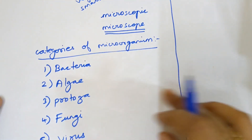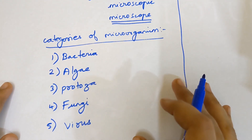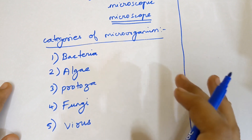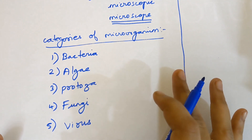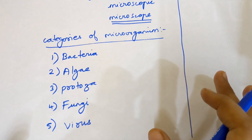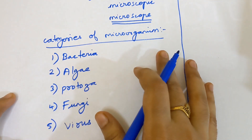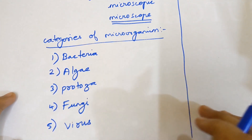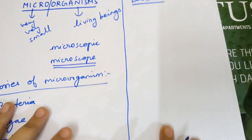Before seeing about each category, one important point: micro-organisms are present everywhere around us — even in the hottest region, even in the coldest region, even in the driest region. It is present in every single climate. One more important point is micro-organisms are not always harmful; some are harmful and some are also useful to us.